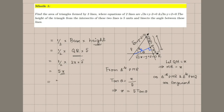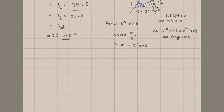From triangle PMR: tan θ = x / 5 (opposite over adjacent), so x = 5 tan θ. Therefore area = 25 tan θ. Now we need to find θ. We know 2θ is the angle between these two lines. We need θ, the acute angle. Using the formula: tan(2θ) = |m₁ − m₂| / (1 + m₁·m₂), which we covered in the lecture on angle between two lines.